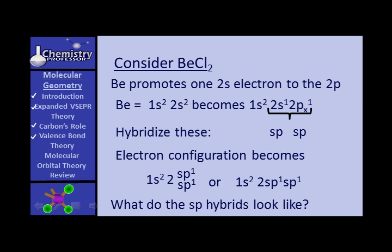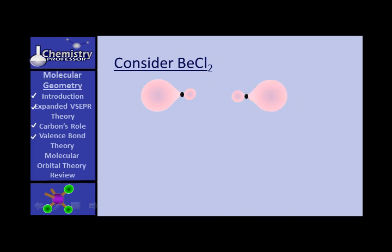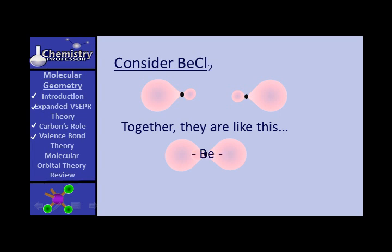What do those SP hybrids look like? They're kind of short and squatty — shorter and squattier than a normal P — with a little bitty back lobe. When you put them together they're arranged linearly, with the beryllium nucleus in there. It can then form bonds with two chlorines, overlapping with the P atomic orbitals of chlorine.